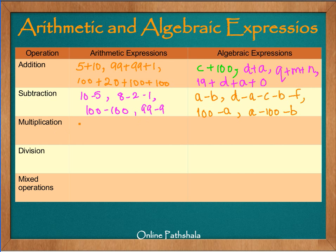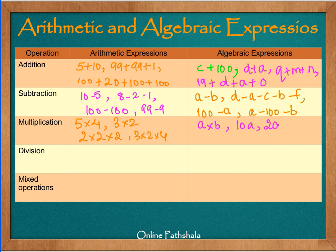For multiplication, arithmetic expressions look like: 5 times 4, 3 times 2, 2 times 2 times 2, or 3 times 2 times 4. For algebraic expressions involving multiplication, we can write: a multiplied by b, 10a, or 20b. Or we can write b into b into b, or a into b into c into d. These are algebraic expressions which involve variables and fixed numbers as well.